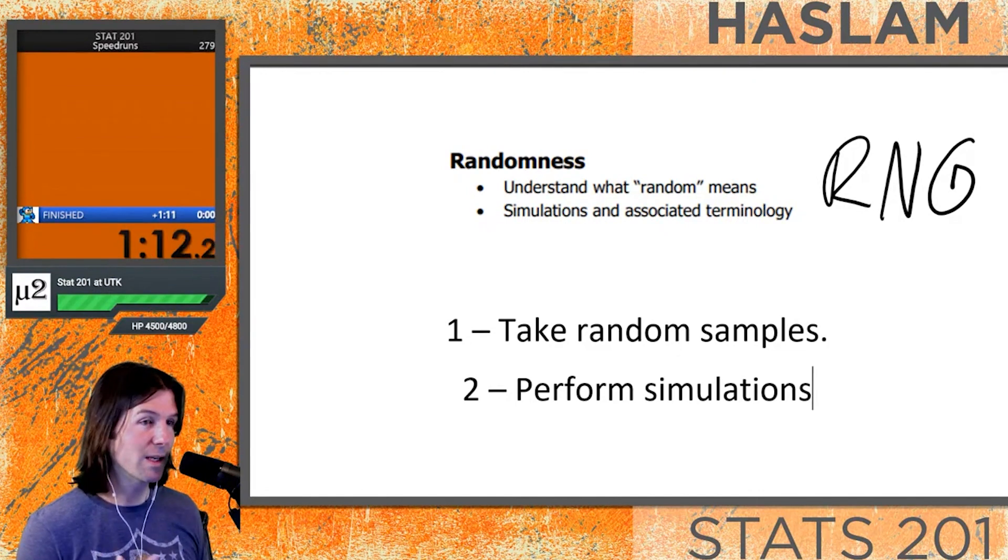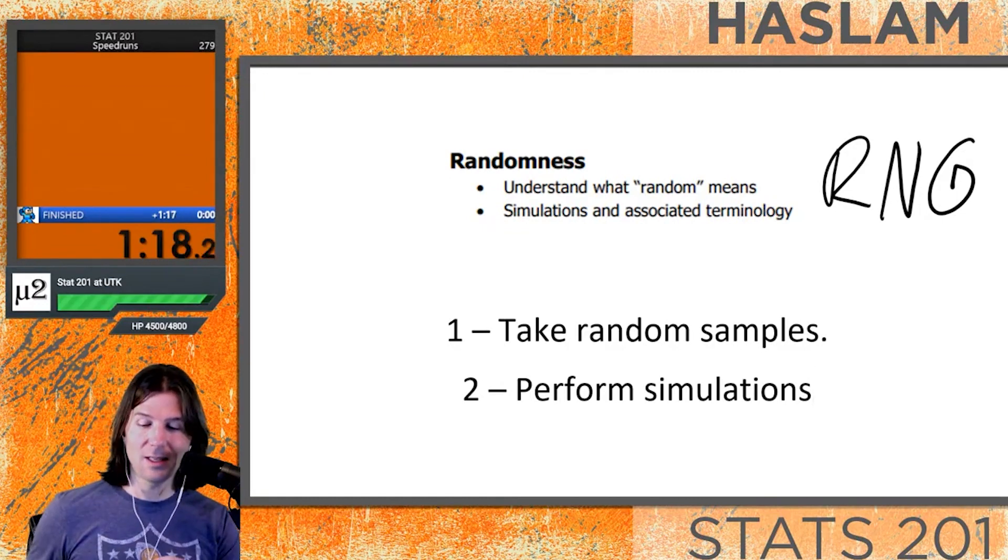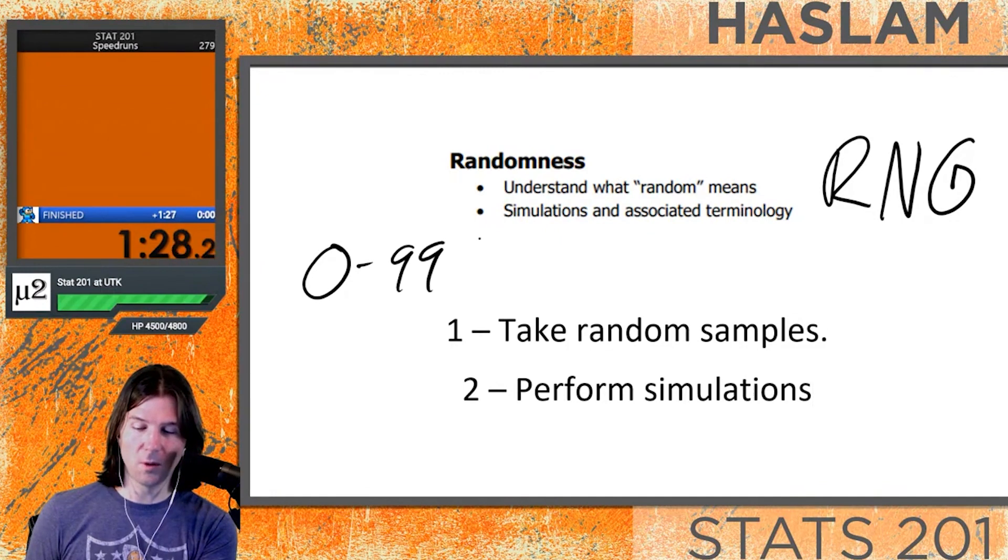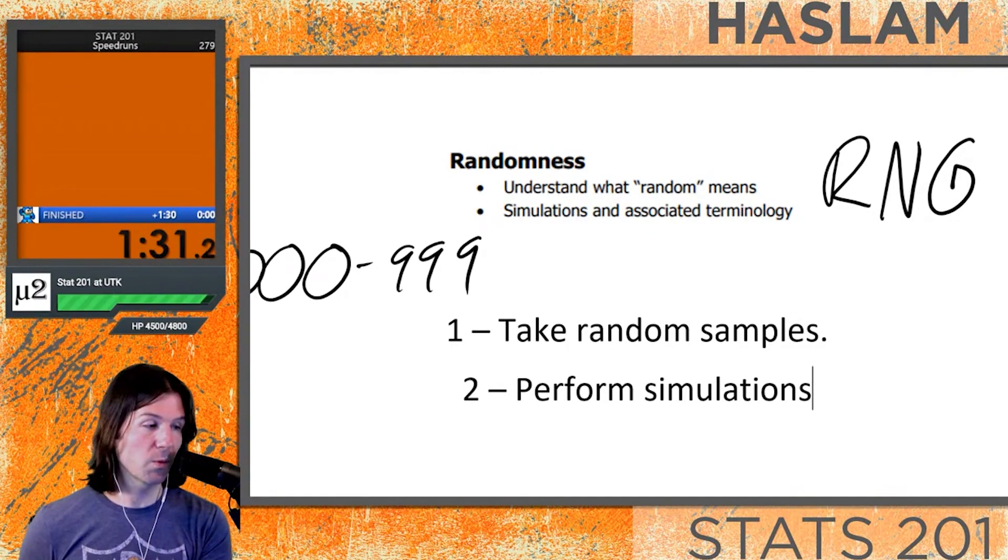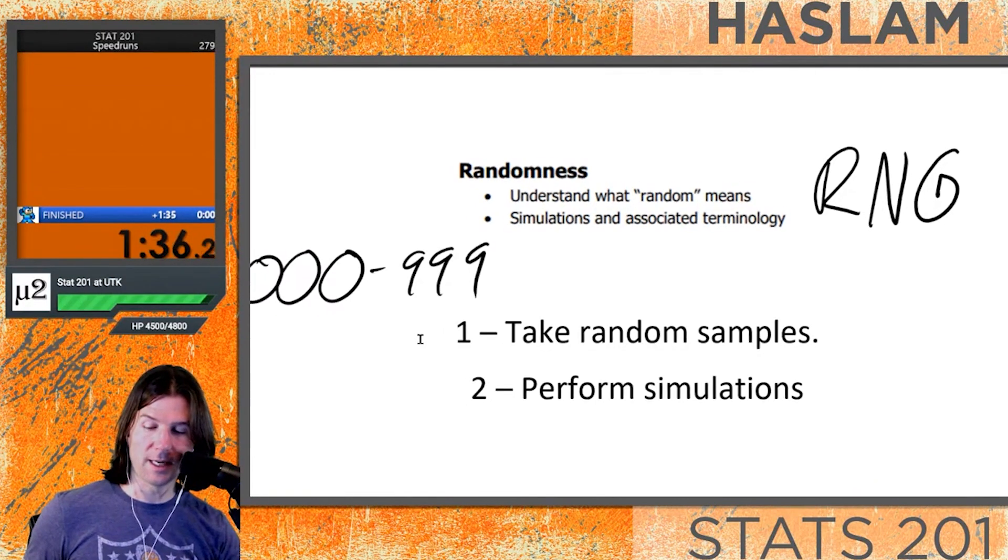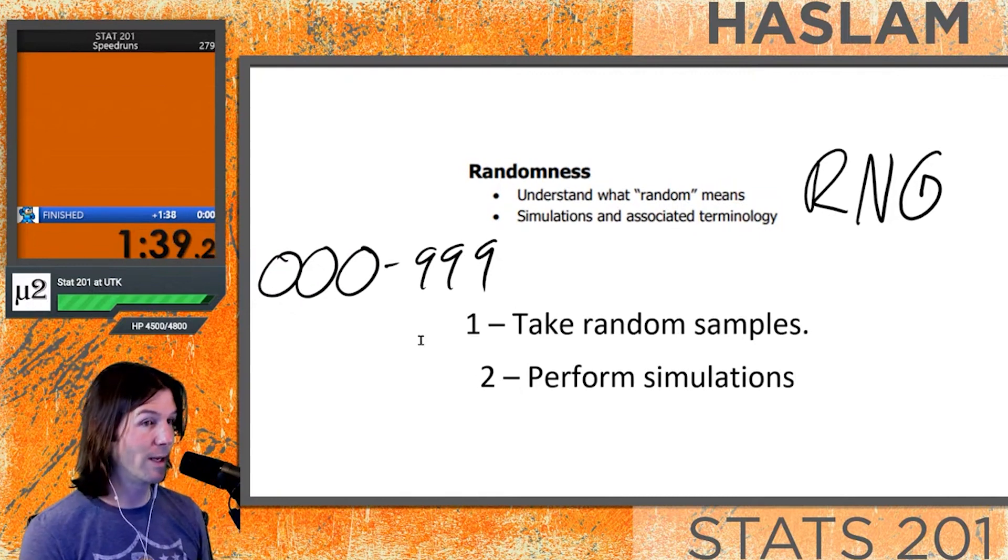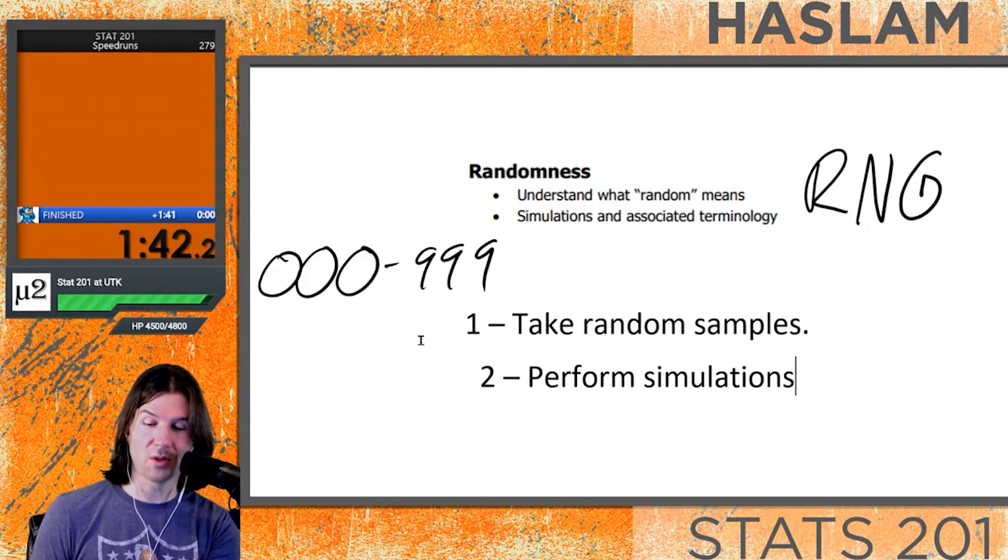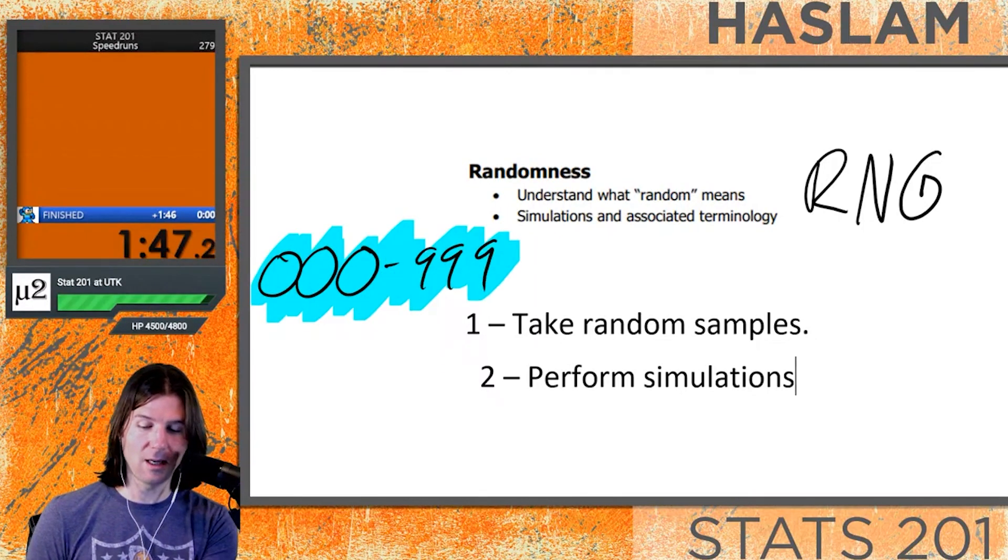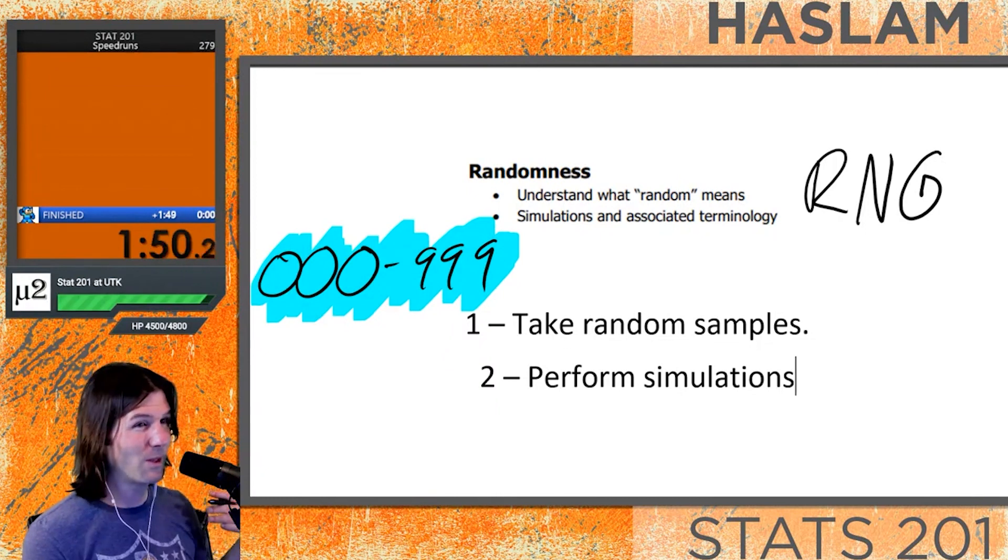Maybe you're trying to get a special item in a video game and it has a one in 1000 chance of appearing. What the video game is doing in the background is it has a list of numbers, maybe zero through 999. We might want to use three digit numbers, so with three digit numbers, zero through nine nine nine, you actually have a thousand numbers. Let's do our own simulation with something a lot smaller.